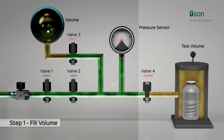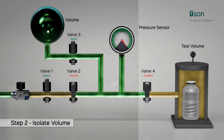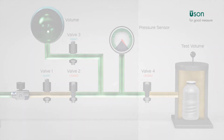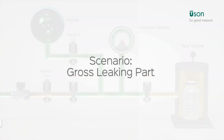This animation demonstrates the test. To begin, the valves are opened and the volume is pressurized to a pressure that excludes the inside volume of the part. The pressure is then isolated to stabilize. Next, the valve opens to the test volume to pressurize the test volume.